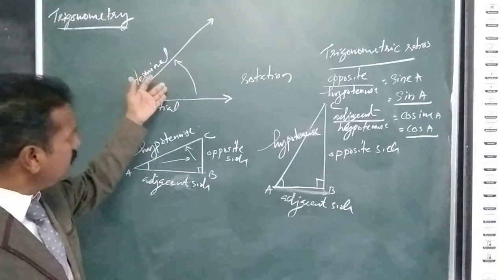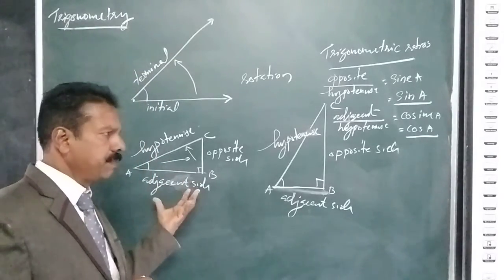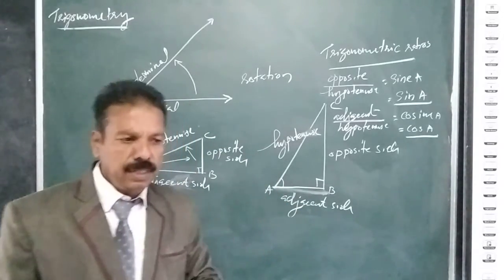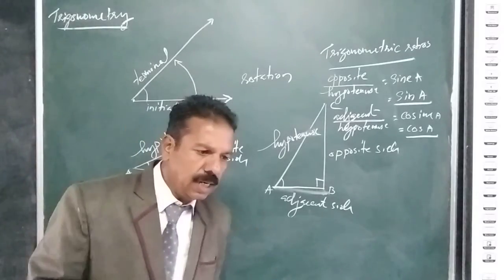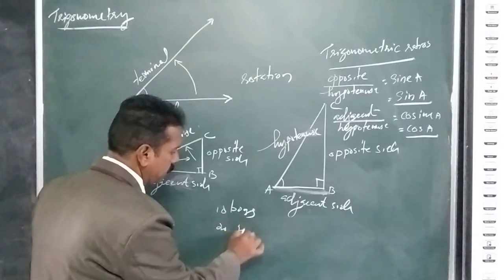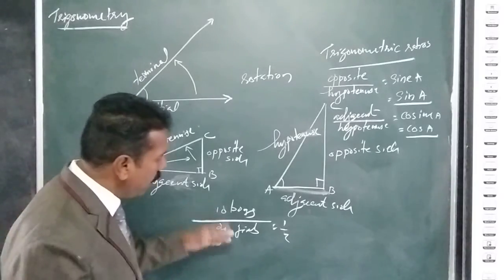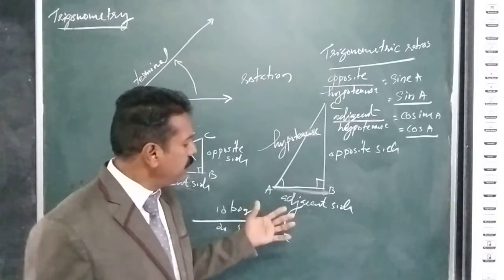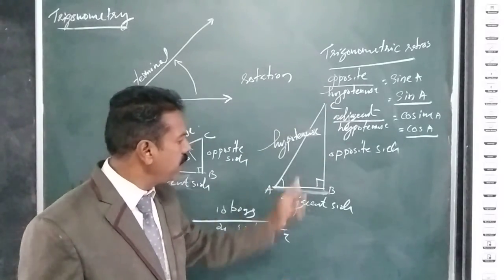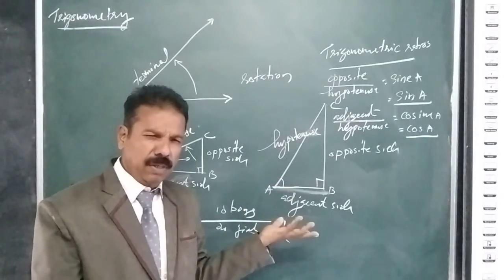For example, ratio is a comparison of two quantities by division. In a classroom, if there are 10 boys and 20 girls, the ratio is 10 by 20, which equals 1 by 2. In the same manner, you can take the ratio of any two sides of the right-angled triangle. You can form six such ratios in total. That is all — very simple. Thank you.